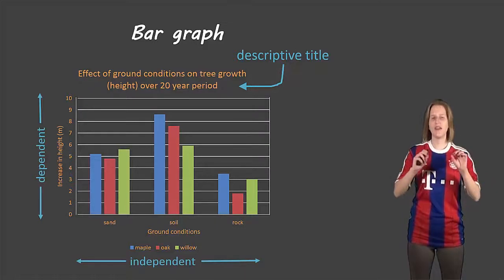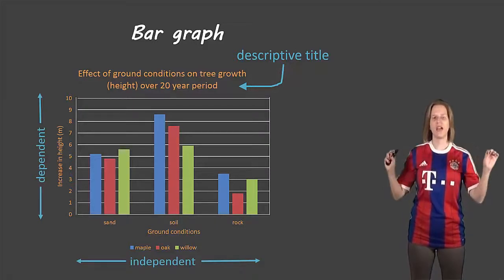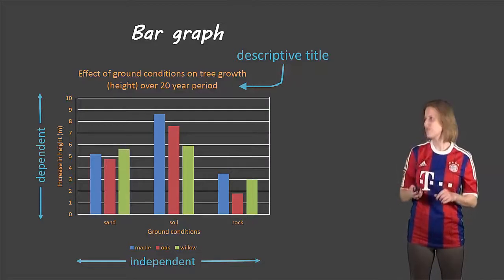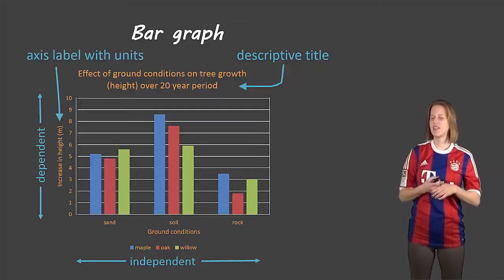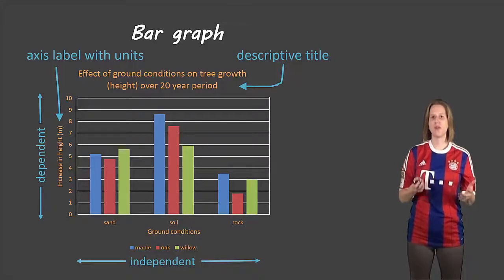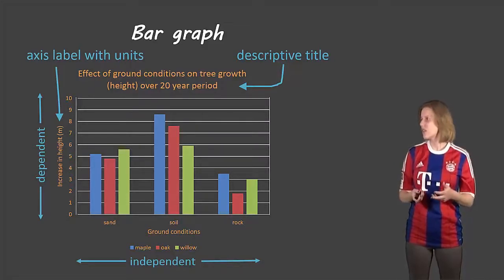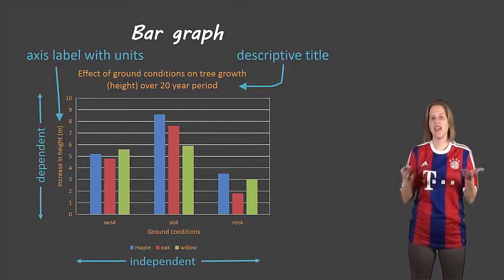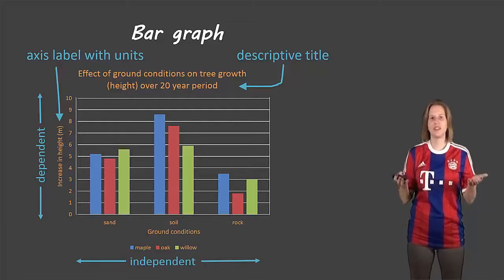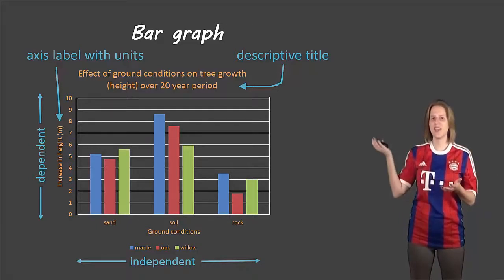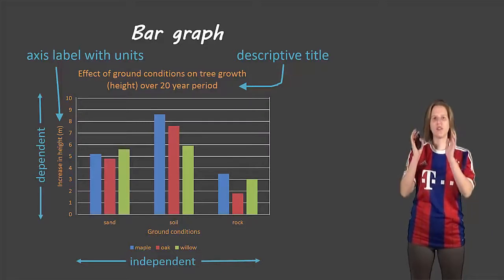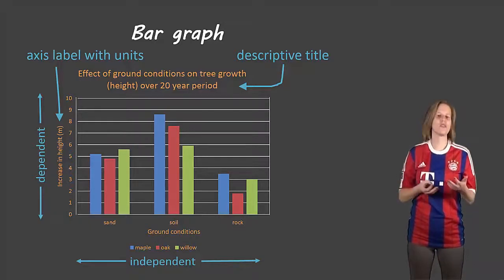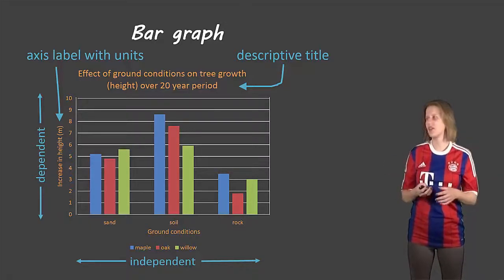The next thing: independent variable goes along the x-axis and dependent goes along the y-axis. The axis has a label and when appropriate it has units. So in this case we're looking at the increase in height. Height is measured in, well, can be measured in different units, but in this case it's measured in meters. So it's given in brackets with meters. If that wasn't written there, we wouldn't know if we're measuring in centimeters or feet or some other type of unit.